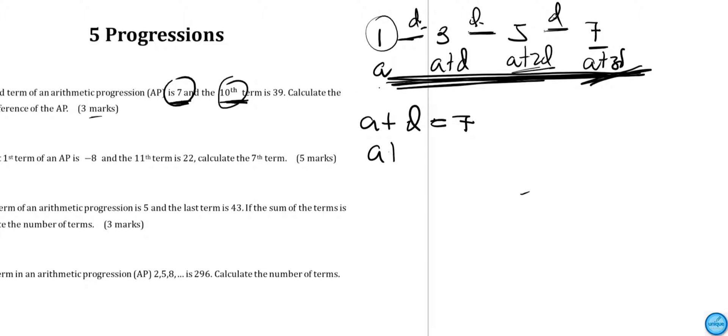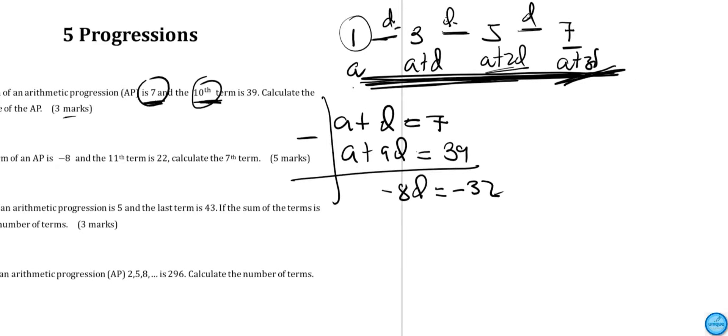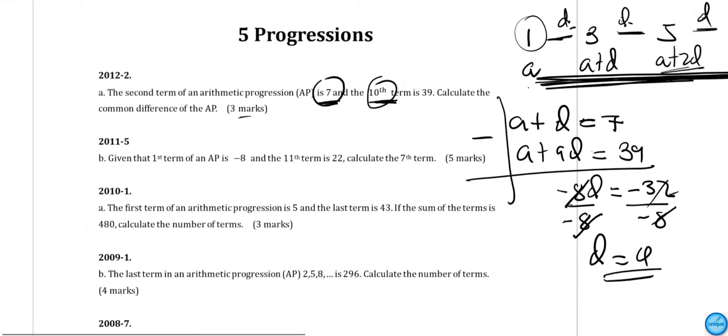We already have the common difference. We're going to solve these using elimination or substitution. I'll use elimination. 7d minus (-39) equals negative 32. Put here negative 32. Negative 8 cancels the minimum. D is equal to 4.